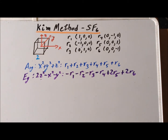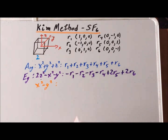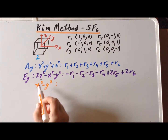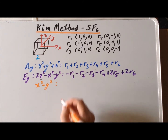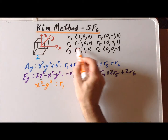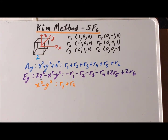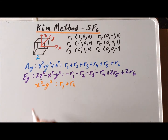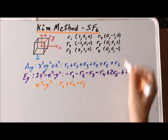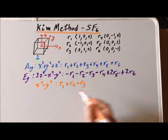Within the Kim method, we can evaluate the other partner of the Eg irreducible representation by independently working with its basis function x²-y². Going through points R1-R6: R1 has x=1, so coefficient is +1. R2 has x=-1, squared gives +1, so coefficient is +1. For R3, y=1, so x²-y²=-1, coefficient is -1. For R4, y=-1, squared gives +1 with the minus sign, so coefficient is -1.